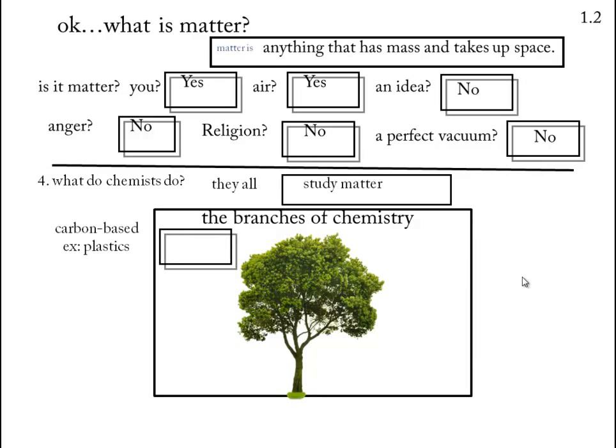Suppose you're studying carbon-based chemistry. For example, you're making plastics. That would make you an organic chemist. Plastics, in particular, would be a polymer chemist.